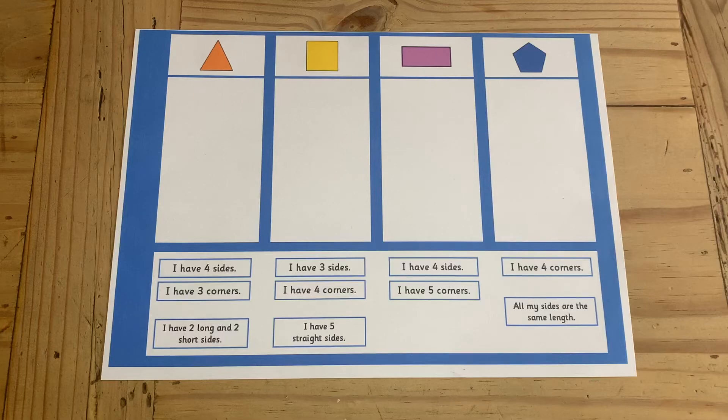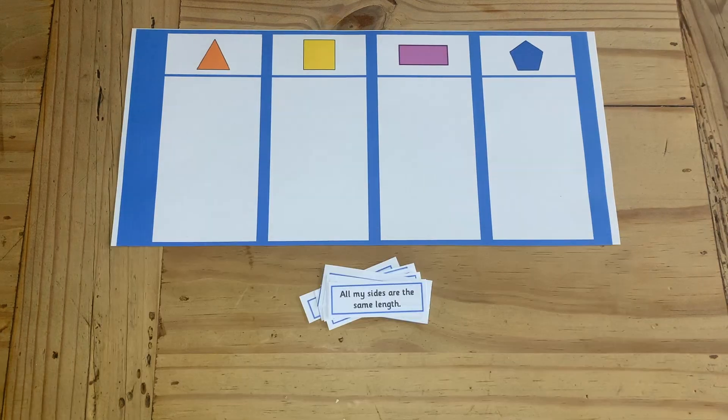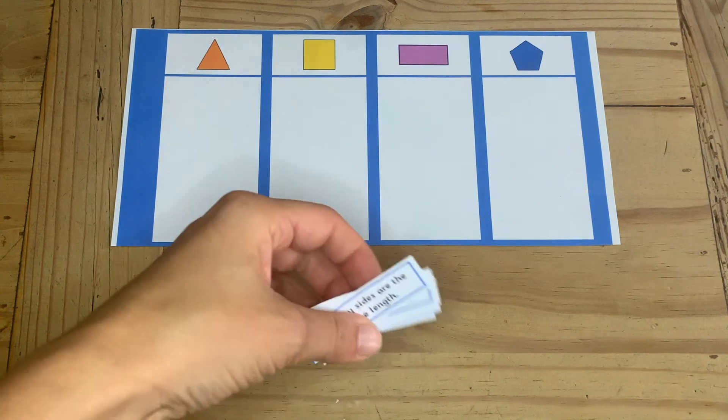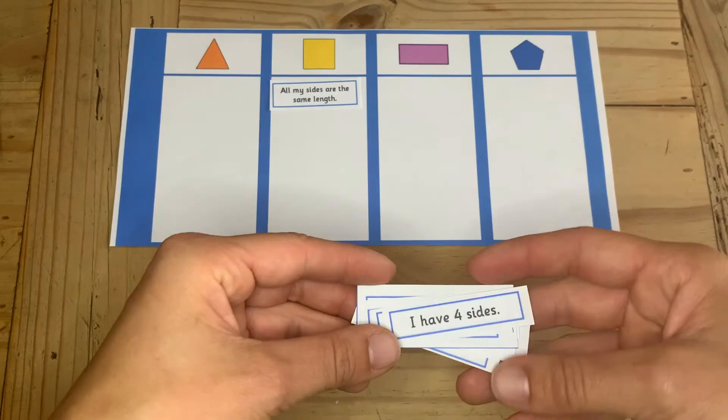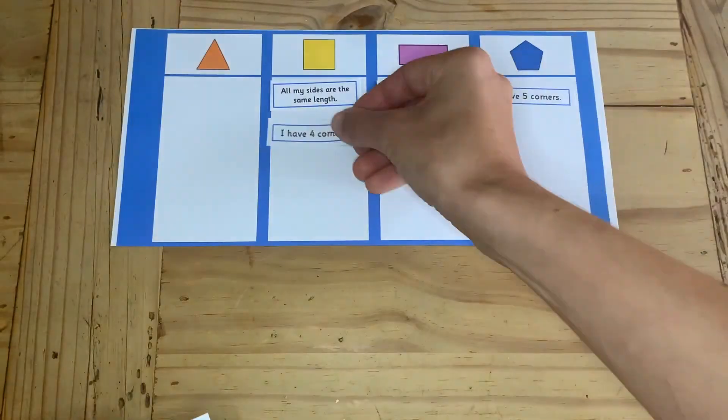You could print this table for your children, cut out all of the statements and see if they can sort them under the correct shape. They could do this independently or in a pair.